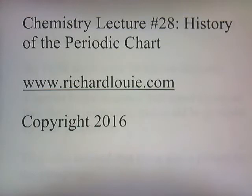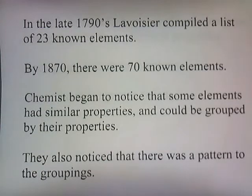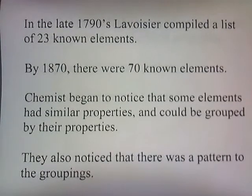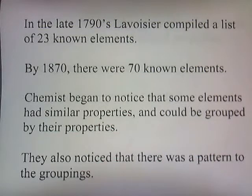Chemistry Lecture Number 28: History of the Periodic Chart. In the late 1790s, Lavoisier compiled a list of 23 known elements. By 1870, there were 70 known elements. Chemistry began to notice that some elements had similar properties and could be grouped by their properties.